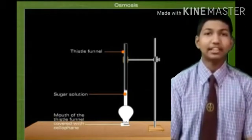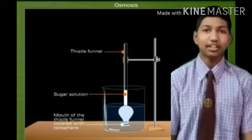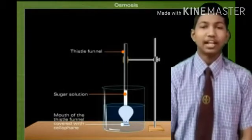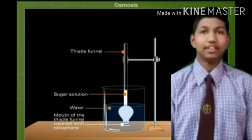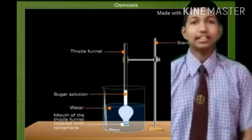Suspend the thistle funnel in a beaker containing water with the support of iron stands. Note the initial level of the sugar solution in the thistle funnel.